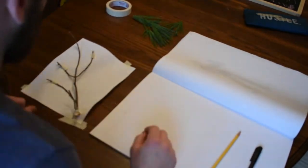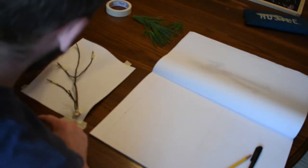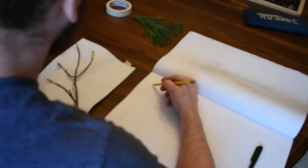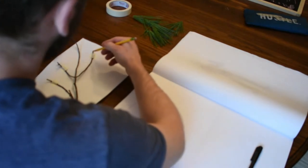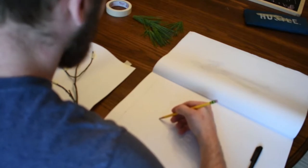Because what we're actually going to be looking at when we're drawing is the shapes that the white paper makes—so the space between the branches. Some of them look like funky little triangles, one of them over there looks like a boot.